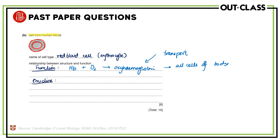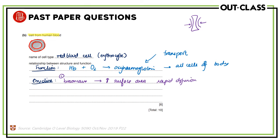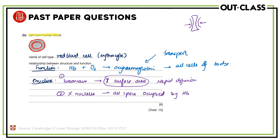The structure of the red blood cell is biconcave — there is a depression on both sides. This biconcave structure increases the surface area, which allows rapid and more efficient diffusion of oxygen through the red blood cell. We want maximum oxygen to reach the body's cells as quickly as possible, so the biconcave shape increasing surface area enables rapid, efficient diffusion of oxygen. The second adaptation is that it contains no nucleus, so that all the space is occupied by hemoglobin.